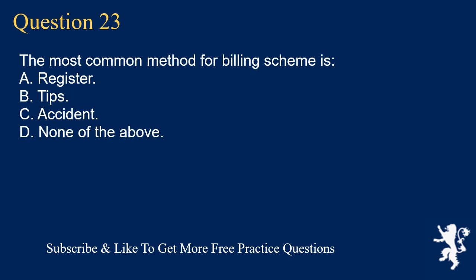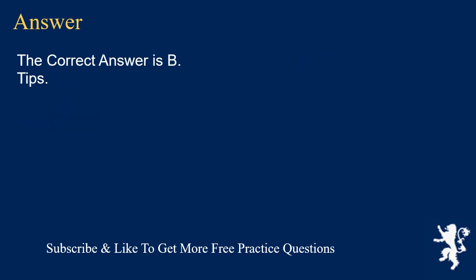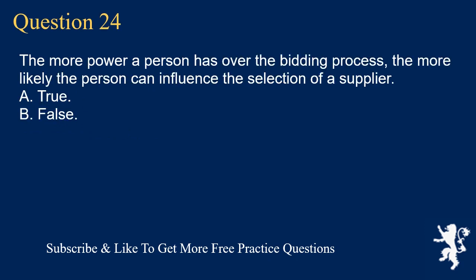Question 23: The most common method for billing scheme detection is: A. Register. B. Tips. C. Accident. D. None of the above. The correct answer is B. Tips.